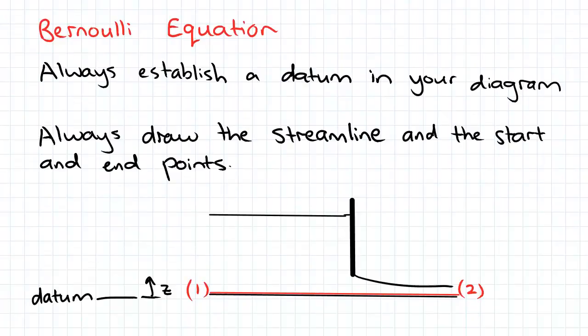Bernoulli equation - this is a big topic. There's a few things here. Always establish a datum in your diagram, so write 'datum' and a line on the datum, or you can notate it as an arrow pointing out from the line with a Z next to it. That's where your Z axis starts. Always draw the streamline and the start and end points.